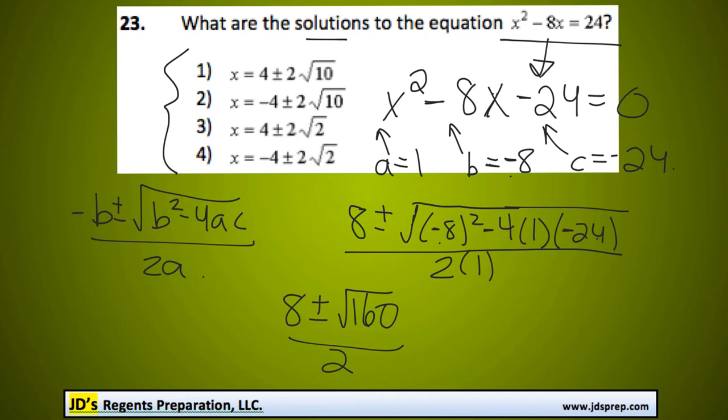And so what we're going to have to do is actually convert the square root of 160 to a mixed radical. To do that, we need to think of what perfect square is a factor of 160. And that would be 16.